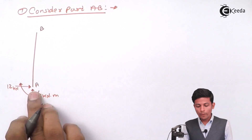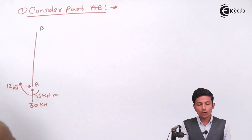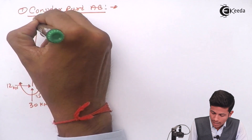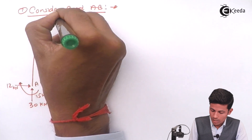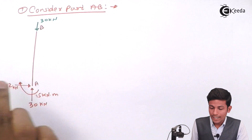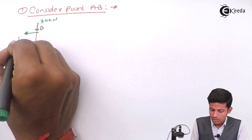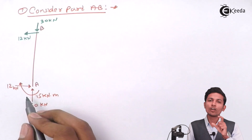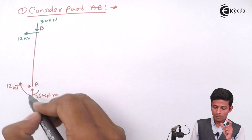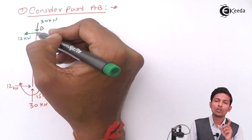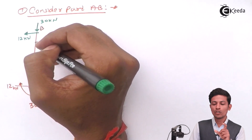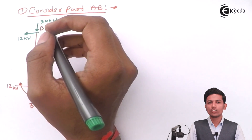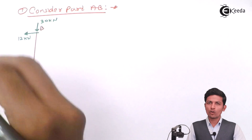Now consider member AB. At joint B, the reaction from member AB on joint B: the 30 kN acts downward at B, so in the second member it acts upward to balance. The 12 kN transfers horizontally. Do not draw the couple here — for bending moment diagram always refer to the original frame diagram directly.